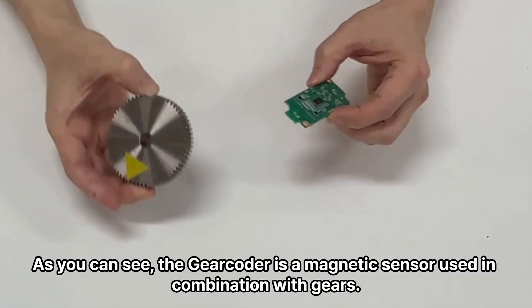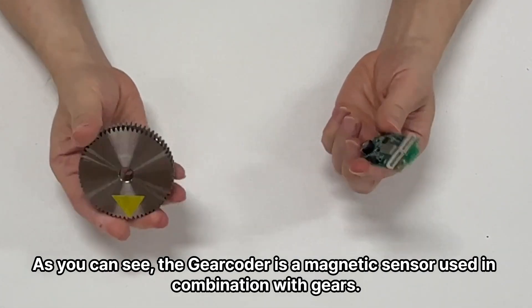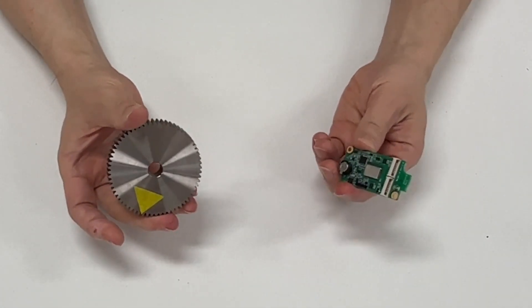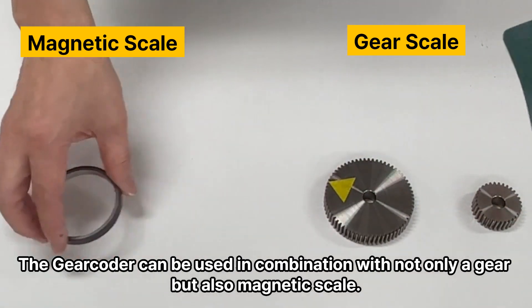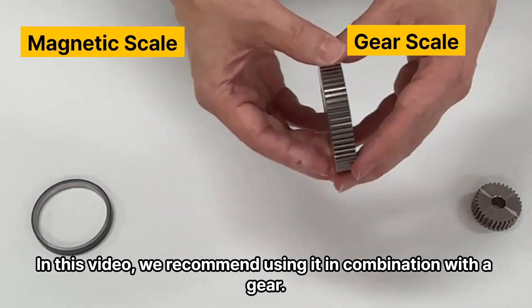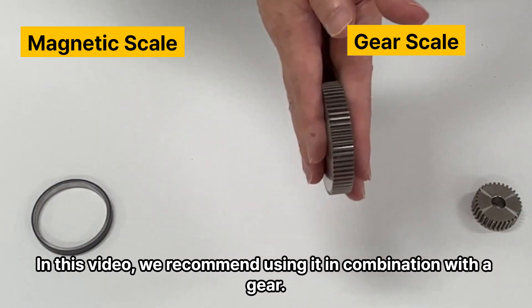As you can see, the gearcoder is a magnetic sensor used in combination with gears. The gearcoder can be used in combination with not only a gear but also magnetic scale. In this video, we recommend using it in combination with a gear.